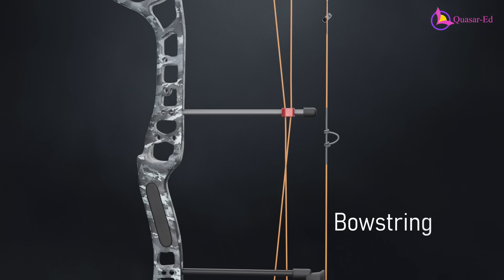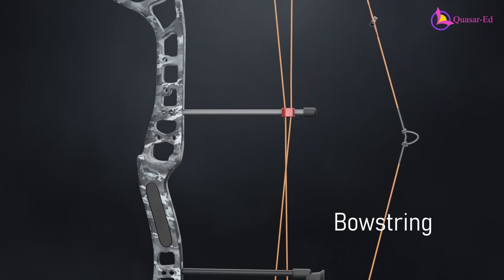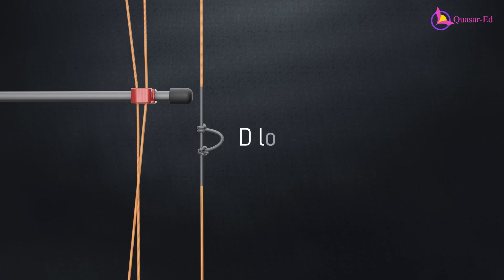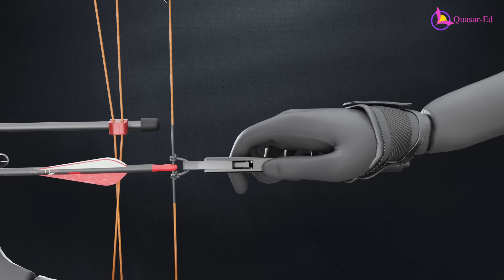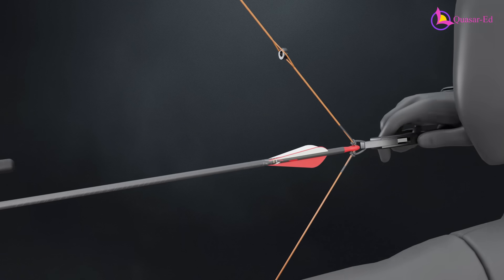The main string, known as the bow string, is what launches the arrow. A small loop called the D-loop is attached near the center of the bow string, marking the spot where the arrow is knocked. The D-loop also provides a secure point for attaching a release aid, which helps the archer draw the string without slipping.